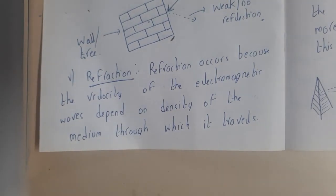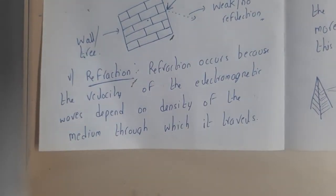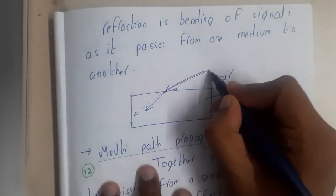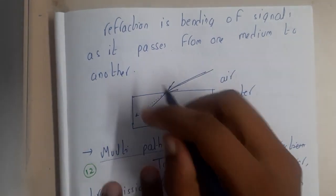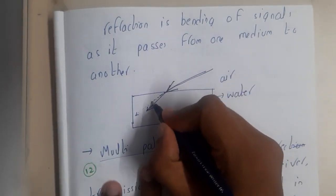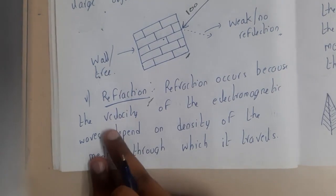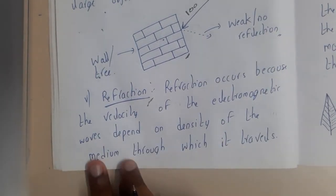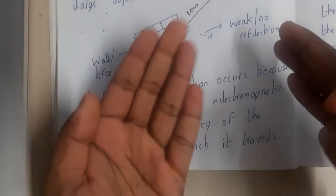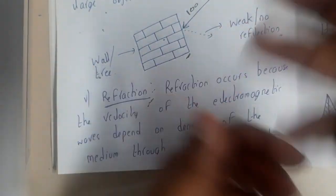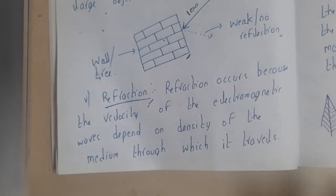The next problem is refraction, which everyone knows. Whenever we emit light into water, it changes angle. Similarly, if a radio wave is going from air into water, instead of going straight it will change angle. This concept is refraction. Refraction occurs because the velocity of electromagnetic waves depends on the density of the medium. Since water density and air density are not the same, the wave bends — that is the main concept here.